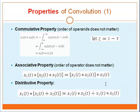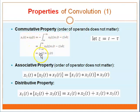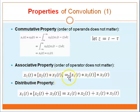These are the properties of convolution. First, the commutative property: the order of the operands does not matter. For example, S1(t) convoluted with S2(t) is the same as S2(t) convoluted with S1(t). Then there is the associative property, where the grouping also does not matter: S1(t) convoluted with S2(t) convoluted with S3(t) is the same as S1(t) convoluted with the result of S2(t) convoluted with S3(t).